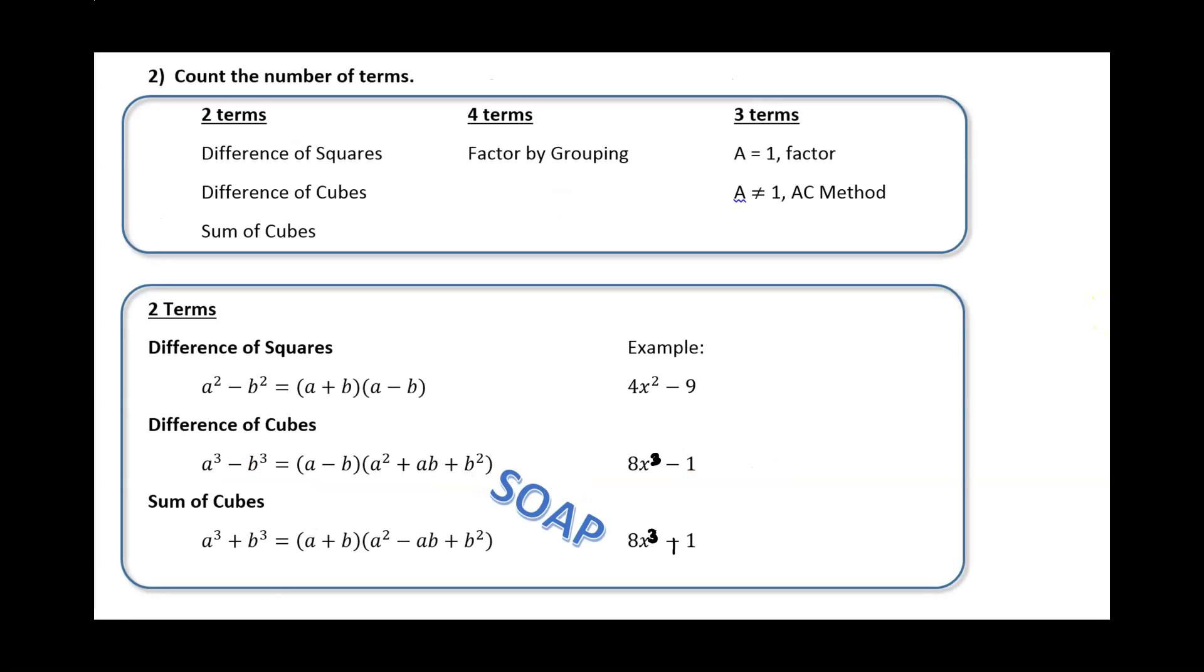Alright, so once I know how to take out my greatest common factor, the second thing I want to do is see how many terms I have, because if I have two terms, or if I have three terms, or if I have four terms, that's what's going to determine my next step. Alright, so let's start with two terms.